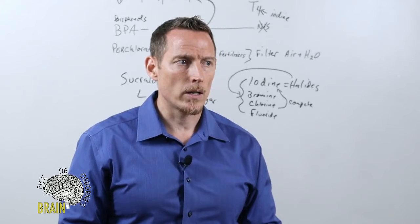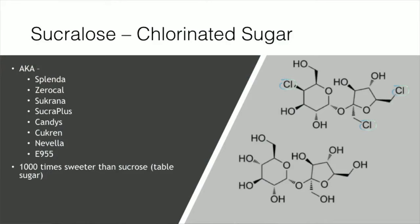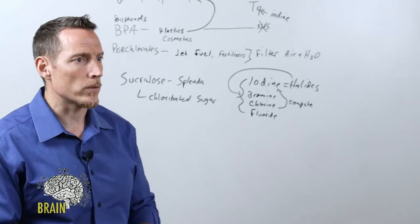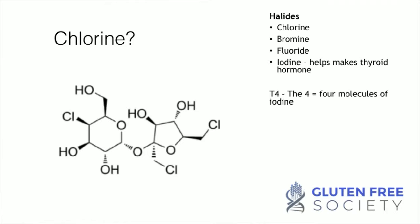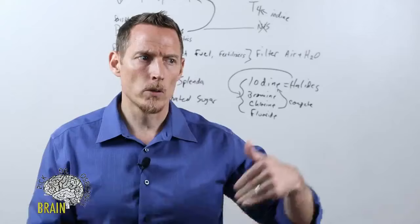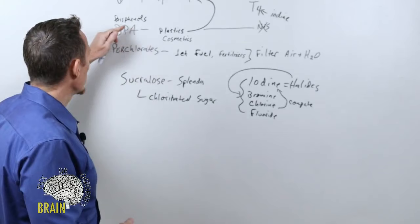Looking at this slide comparing sugar versus sucralose, sucralose substitutes a couple of chlorine molecules for hydroxyl molecules — that's what makes it different. It's supposed to create a scenario where you can't absorb the sugar, making it calorie-free, but you can absorb those chlorines just fine into your body. So far we've got bisphenols, perchlorates, and Splenda. Now let's talk about coffee.